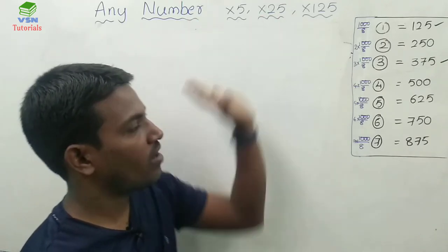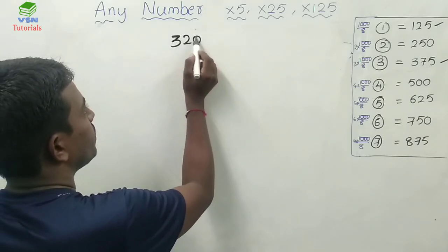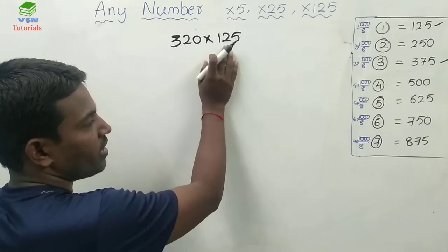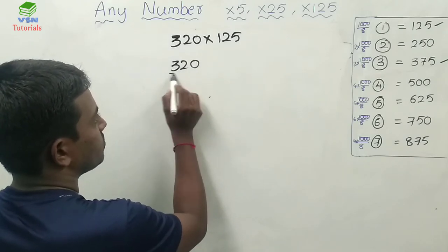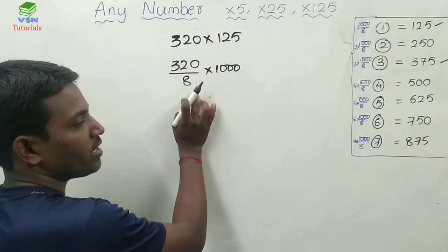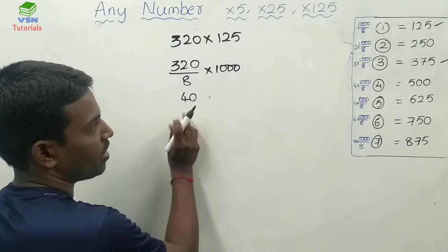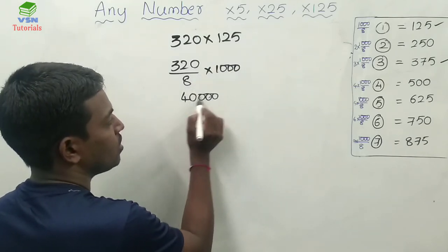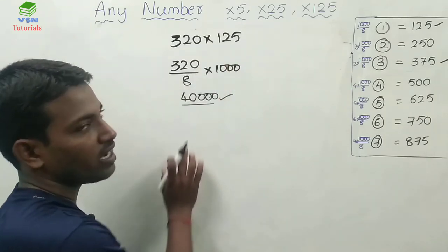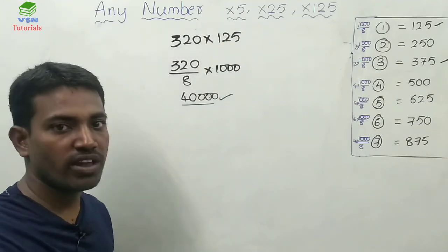Now let's learn the trick for multiplying any number by 125. Let me take the example: 320 is to be multiplied by 125. This 125 can be written as 1000 divided by 8. So 320 divided by 8 is 40, and 40 into 1000 is 40,000. Your answer is 40,000. Like this way you can get the values of a number multiplied by 125 very easily.